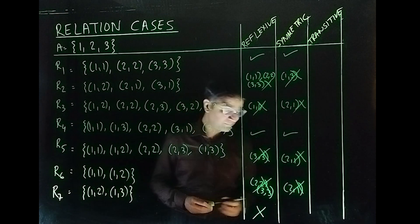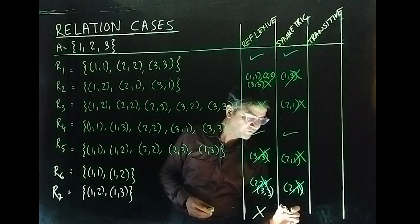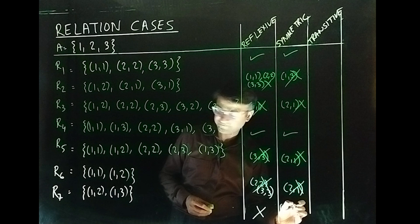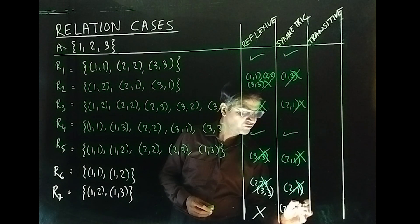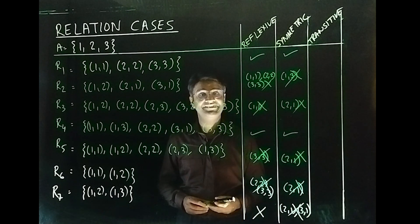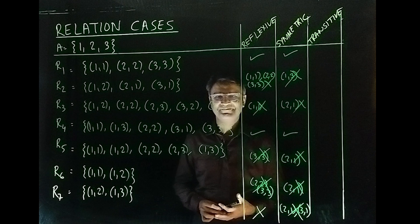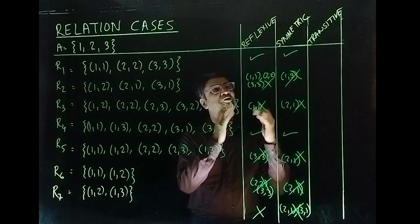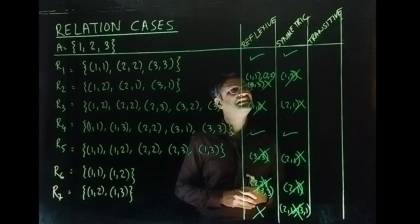How about this? Oh, same case. You don't have (2,1). And you also don't have (3,1). So, yeah. It is not symmetric.